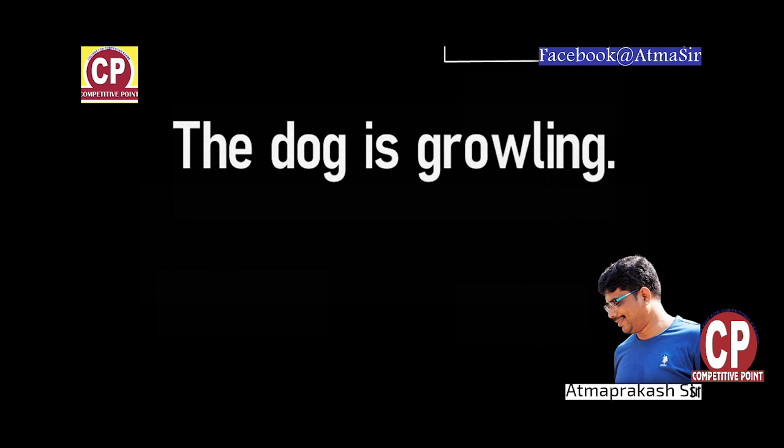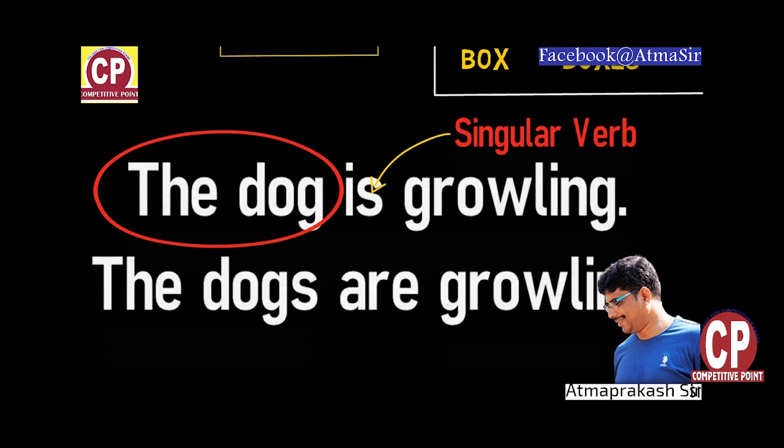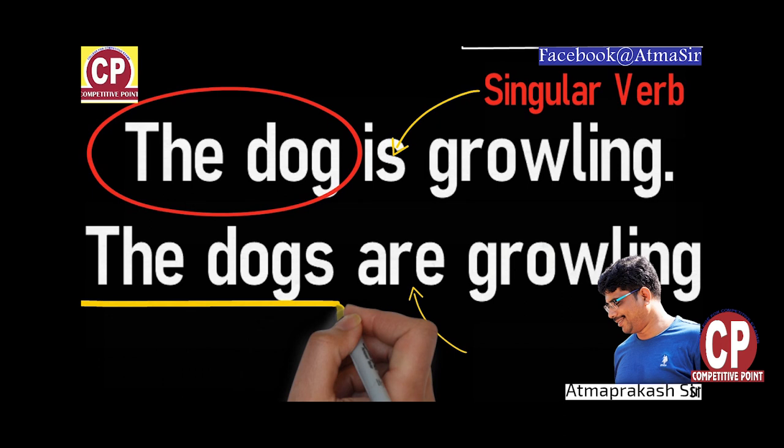Let us take some examples. We say: the dog is growling. But when the subject becomes plural, we say: the dogs are growling. In the first sentence we used the singular verb 'is', but in the second sentence we used 'are', because in the second sentence the subject is plural.